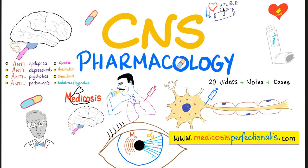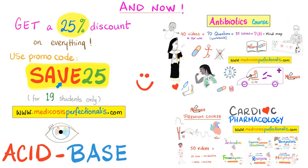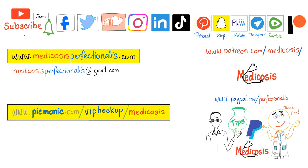If you want to take your neuro knowledge to the next level, get my CNS Pharmacology course. It has 20 videos and notes and cases that teach you about opiates, anesthetics, stimulants, sedatives and hypnotics, anti-epileptics, anti-depressants, anti-psychotics, and anti-Parkinsonian agents. Download it today at medicosisperfectualist.com. Most doctors are doofuses when it comes to neuro, so please master your craft. You can also download my antibiotics course—comes with 40 videos. For the next 19 students, you can get a 25% discount on everything on my website. Just use promo code SAFE25.